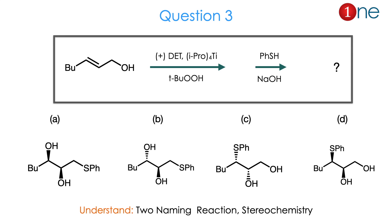The starting material is a linear chain with an alkene and an alcohol. You are using (+)-DET, titanium isopropoxide, and a peracid, followed by thiol and base. They ask you to find the product. The products differ stereochemically — whether dihydroxylation occurs or one hydroxyl is replaced by thiophenyl is the real question. You have to determine whether the hydroxyl groups are in anti or syn positions, or if one is replaced by thiophenyl. The answer is B.